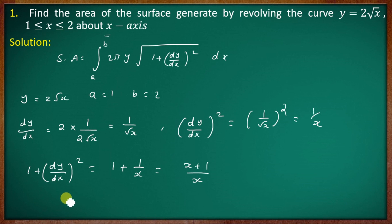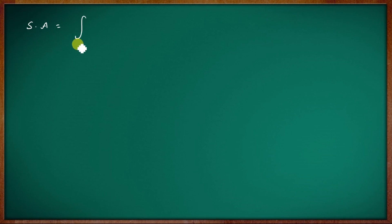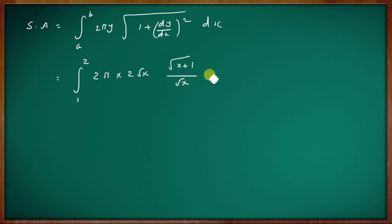The square root of 1 + (dy/dx)² is √((x+1)/x), which equals √(x+1)/√x. Now applying the surface area formula with a = 1, b = 2, and y = 2√x, we get the integrand 2π · 2√x · √(x+1)/√x dx.